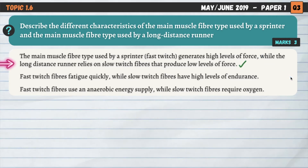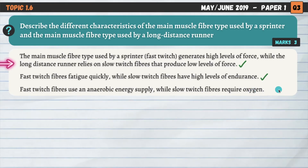Our second point: fast twitch fibres fatigue quickly and are not very good at endurance, while slow twitch fibres have high levels of endurance — one more mark. Third point: fast twitch fibres use an anaerobic energy supply, while slow twitch fibres require oxygen, meaning they use an aerobic energy supply. We've used only three characteristics but applied the opposites for the two different muscle fibre types.